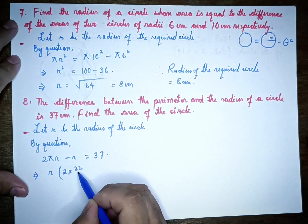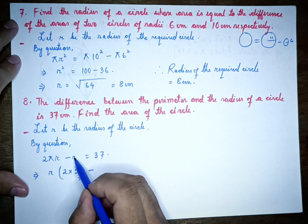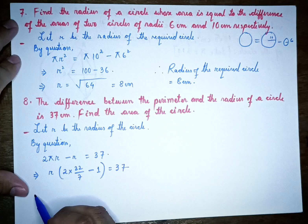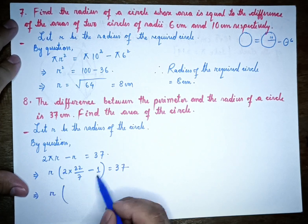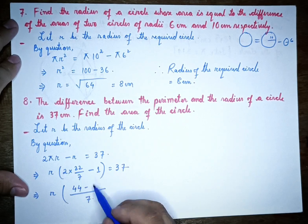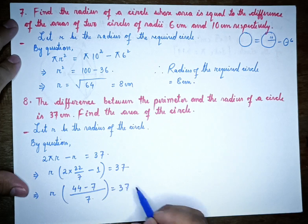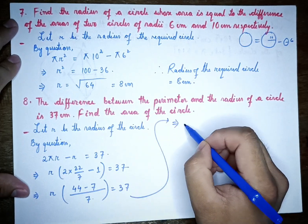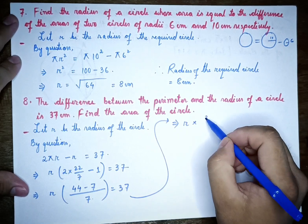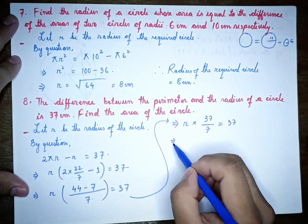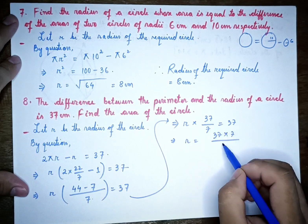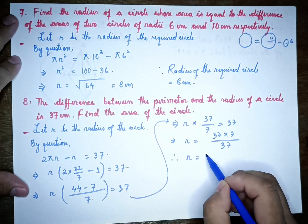We substitute pi as 22 by 7, so 2 times 22 by 7 minus 1, times r equals 37. This gives r times 44/7 minus 1 equals 37, which implies r times 37/7 equals 37. So r equals 37 times 7 divided by 37, which gives r equals 7.